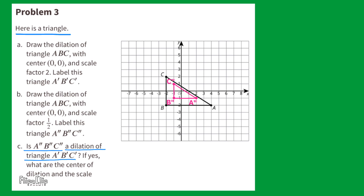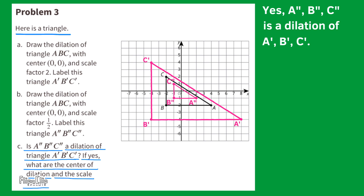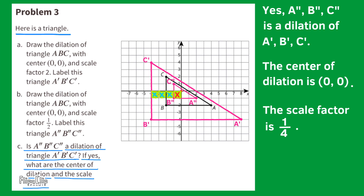Part C: Is A'', B'', C'' a dilation of triangle A', B', C'? If yes, what are the center of dilation and the scale factor? Looking at both triangles, the larger triangle A', B', C' is exactly 4 times bigger than the smaller triangle A'', B'', C''. So the answer is yes — A'', B'', C'' is a dilation of A', B', C''. The center of dilation is (0, 0). A'', B'', C'' is exactly 1/4 the distance away from the center compared to A', B', C', so the scale factor is 1/4.